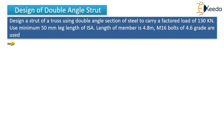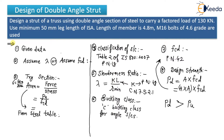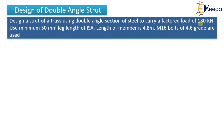As discussed in the previous video, the steps involved are: first, write the given data; then assume a value of lambda or fcd; try the section from the steel table; classify the section using page 18, table 2; find the slenderness ratio; write down the buckling class — it will always be C for angle sections; calculate fcd from IS code using interpolation; and finally calculate the design strength, which should be greater than the given load of 130 kN.